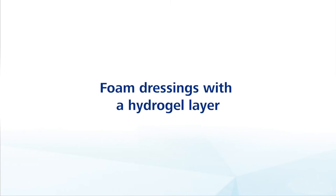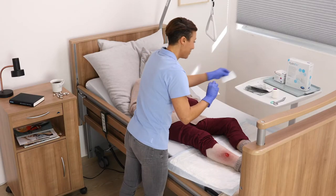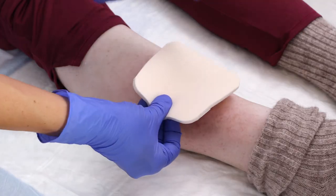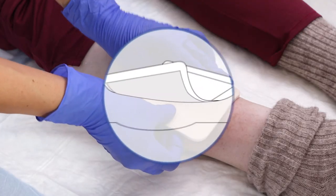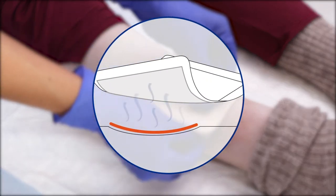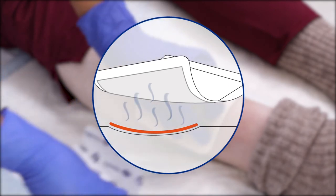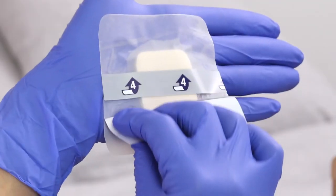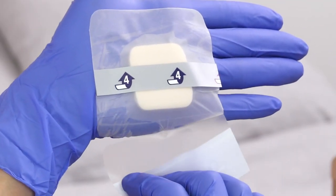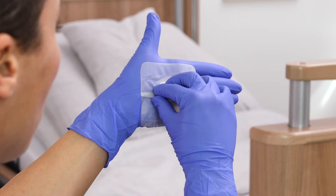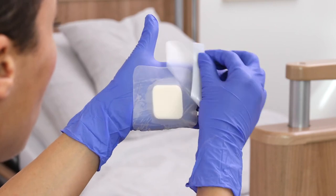Foam dressings with a hydrogel layer primarily provide a moist wound climate that promotes healing. They are also available with a self-adhesive edge for fixation, so that no additional dressing is required for fixing.